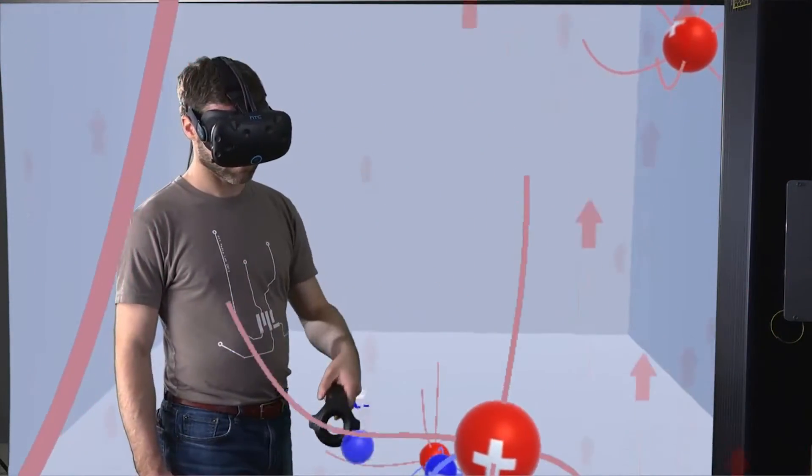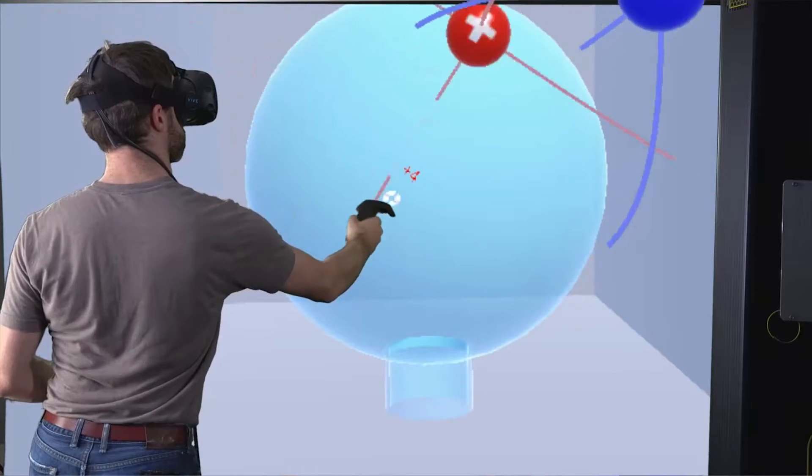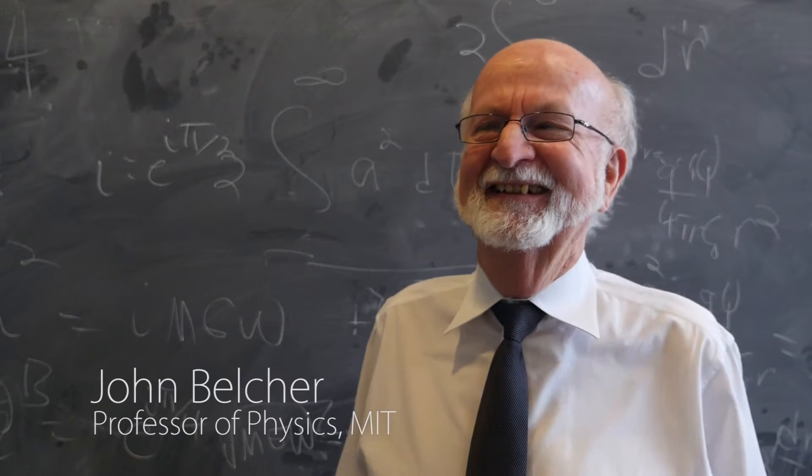Electrostatic Playground is a project of the Fluid Interfaces Group at the MIT Media Lab. The team consists of Gabriel Fields, Scott Greenwald, and John Belcher.